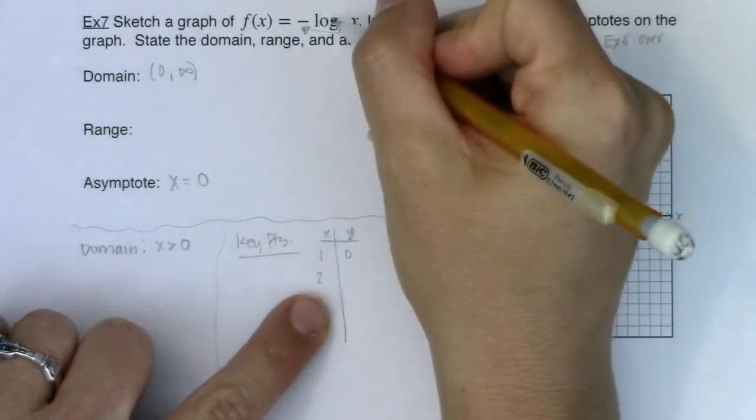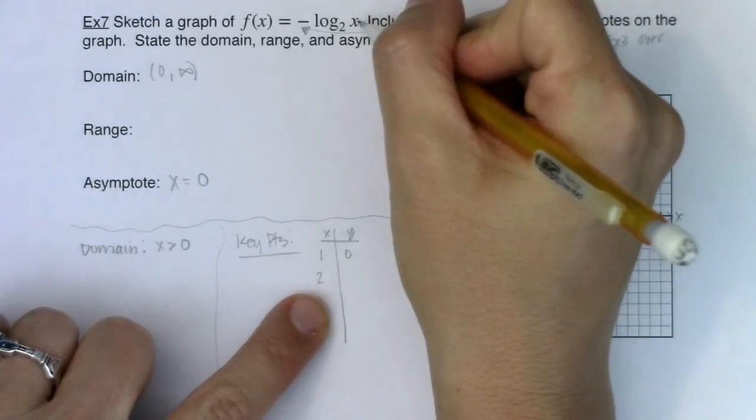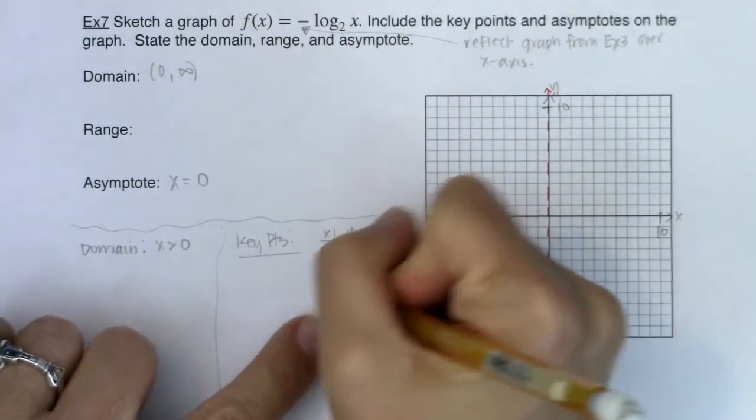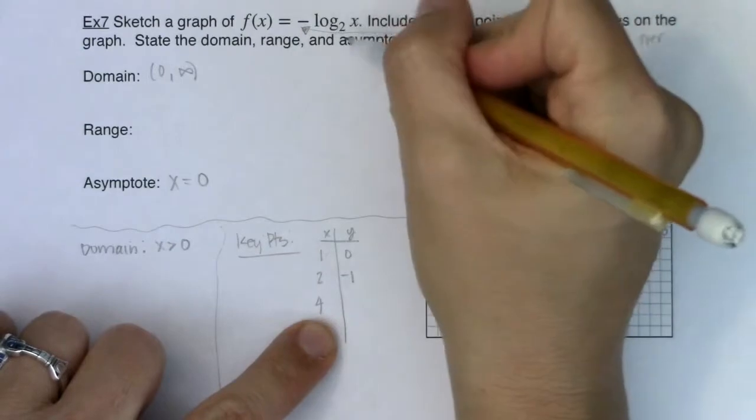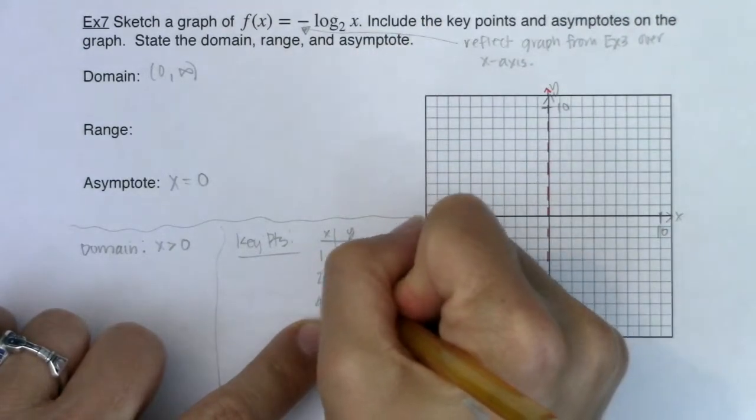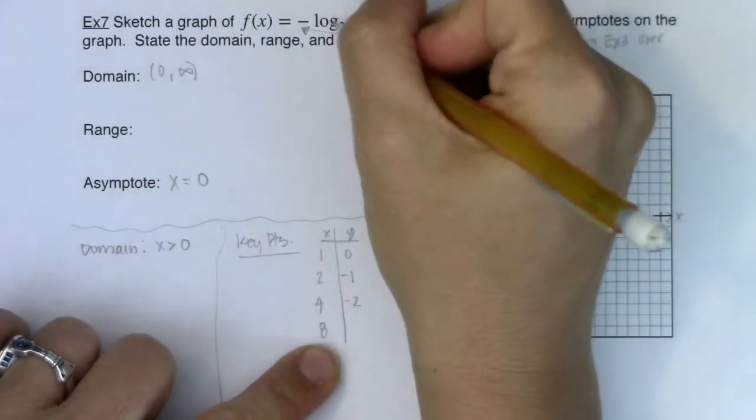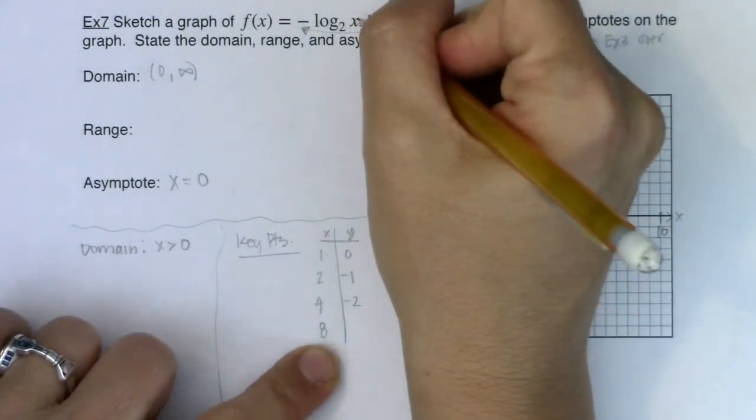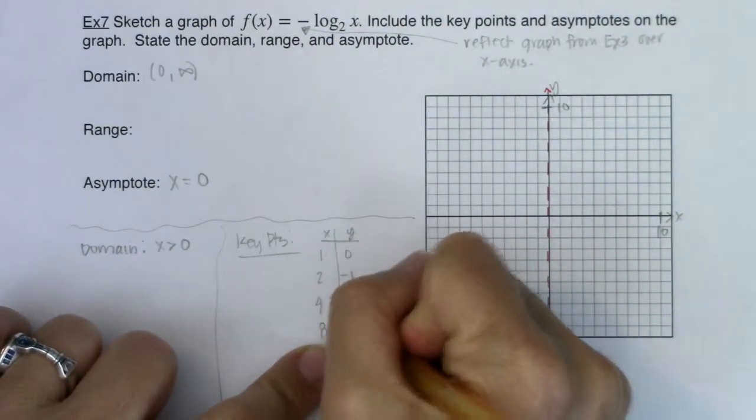All right let's try x equaling two. Log base two of two is one. One times negative one is negative one. All right for four, log base two of four is two. Two times negative one is negative two. For eight, log base two of eight is three. Three times negative one is negative three.